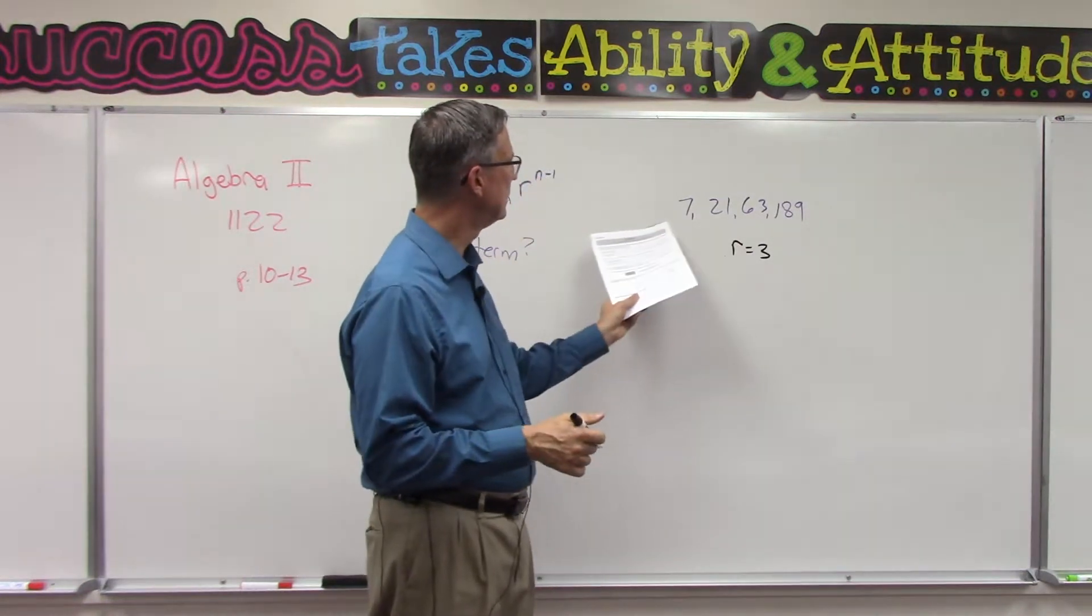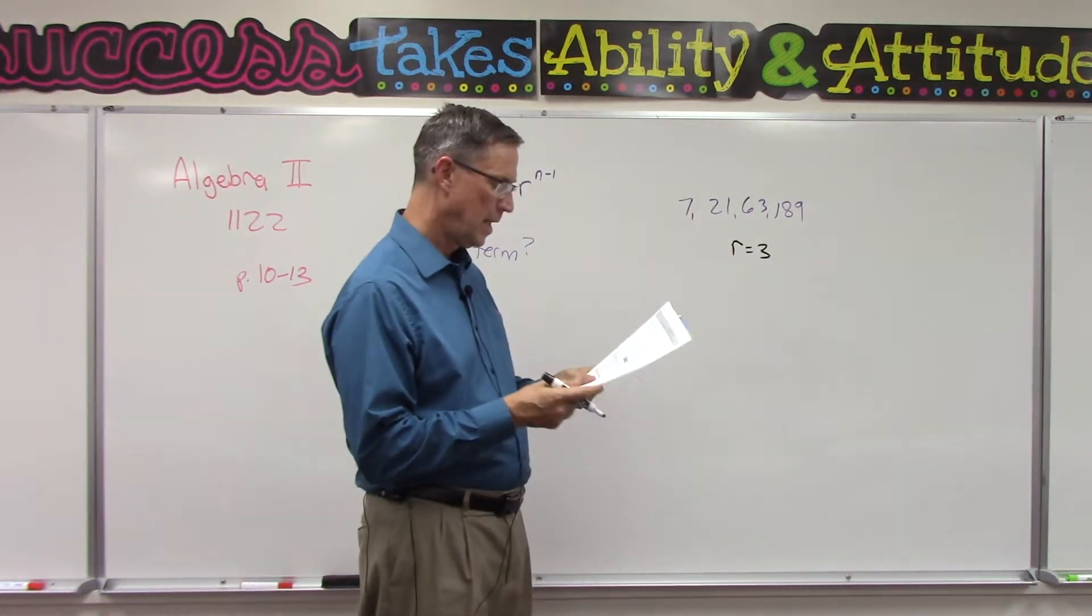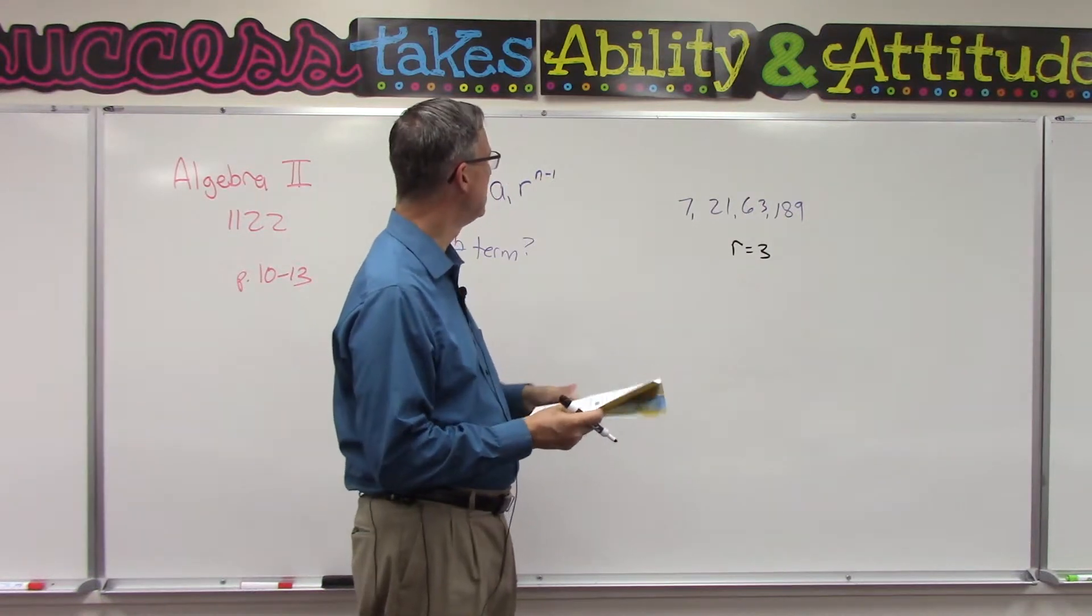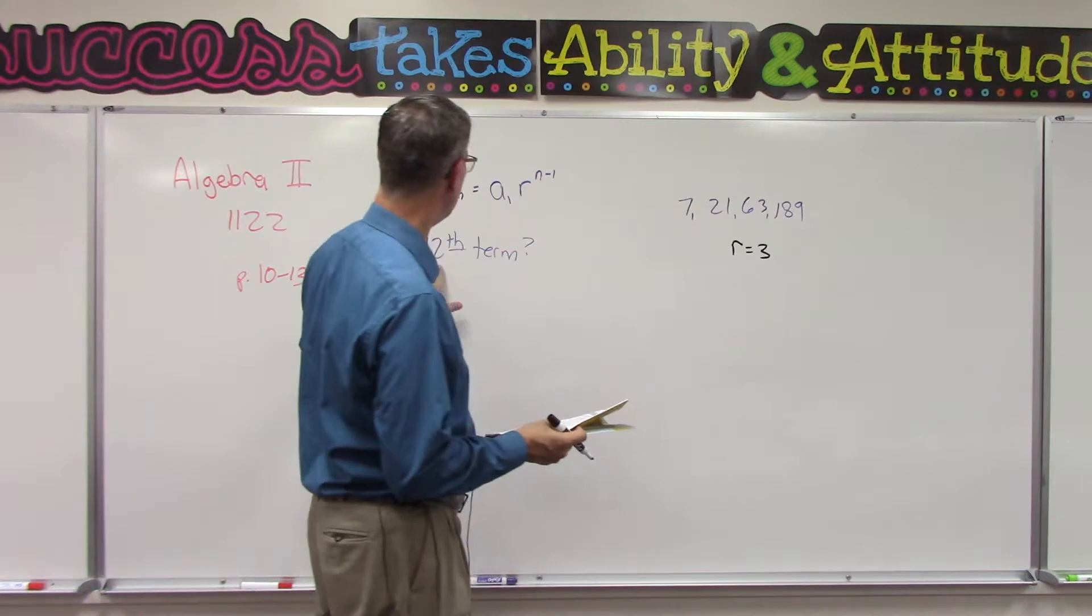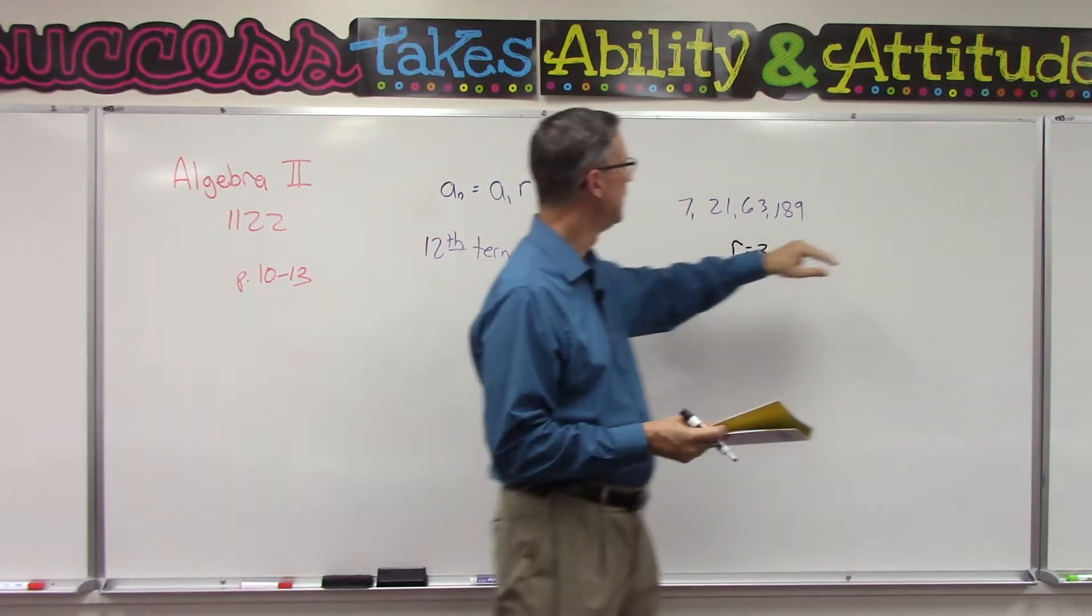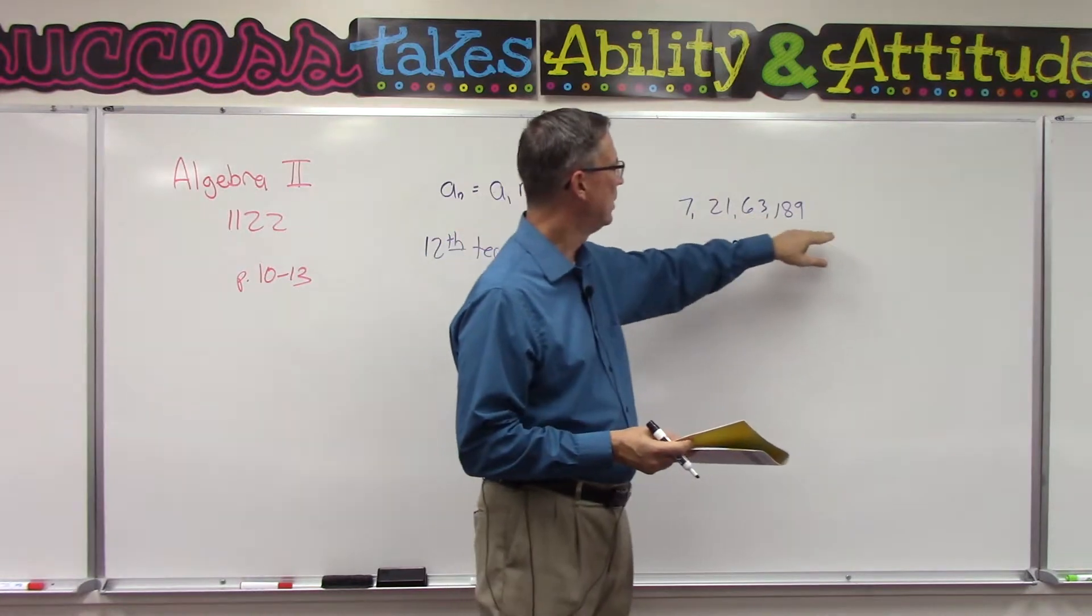Okay, then I'm going to take this little sequence here, and we're going to try to figure out what would the 12th term be if we carried this out. So I have four of them here, and I could keep multiplying times 3, times 3, times 3, and keep going until I get all the way out there to the 12th term.